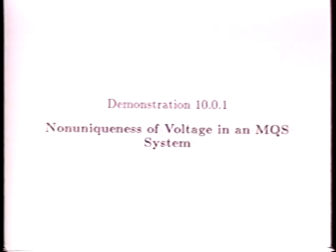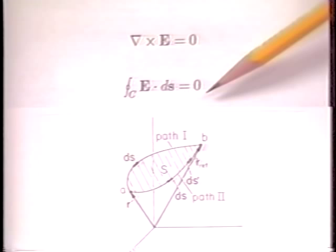When the electric field intensity is essentially irrotational, we can count on its having no circulation around a closed path. This means that its integral between two points is the same, regardless of path.